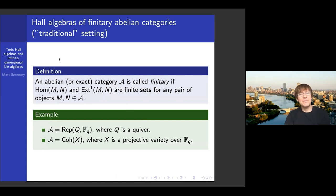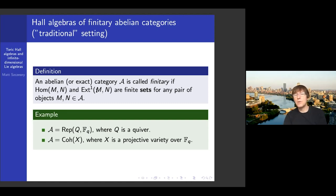Hall algebras have been used in representation theory since at least the 1980s. You start with an abelian category which has strong finiteness conditions — called being finitary — meaning that the set of morphisms and the set of extensions between any two objects are finite as sets. This is not so easy to achieve because if the category is linear over some field, that field had better be finite, otherwise a finite-dimensional vector space won't be a finite set. The two main sources of examples are quiver representations and coherent sheaves on projective varieties over finite fields.